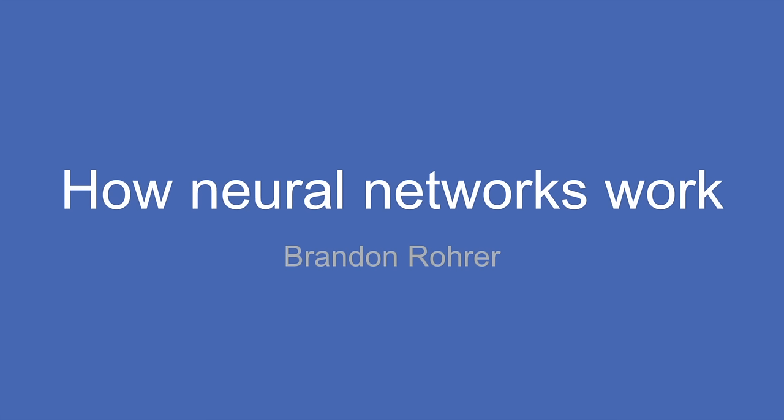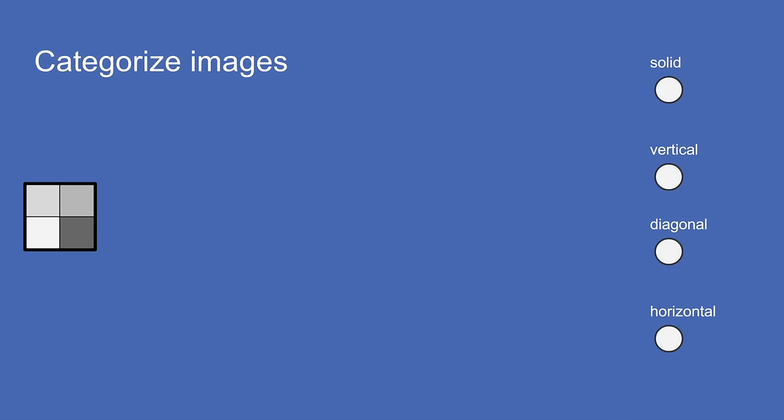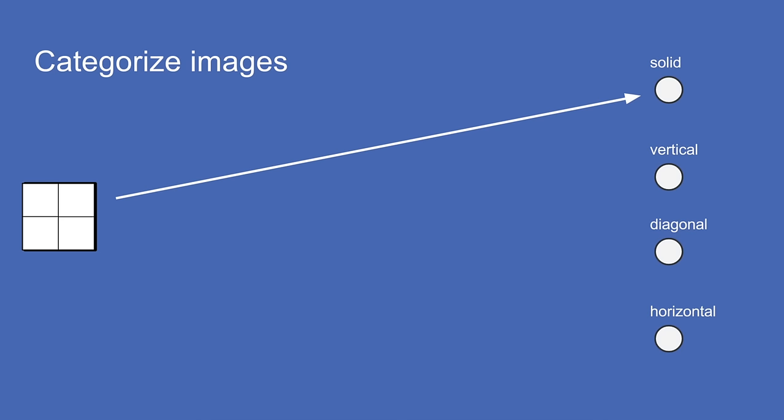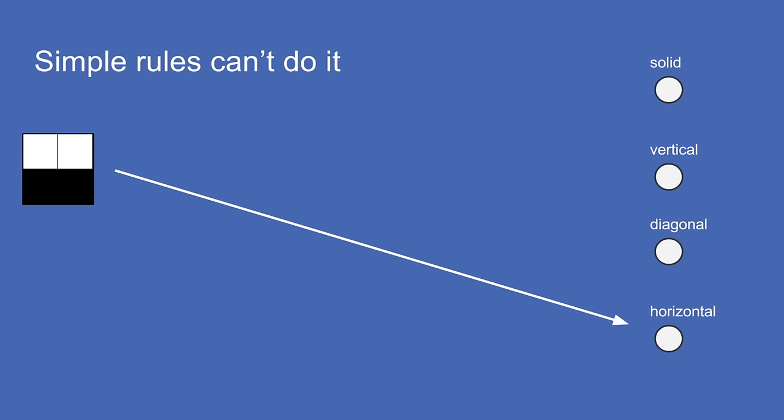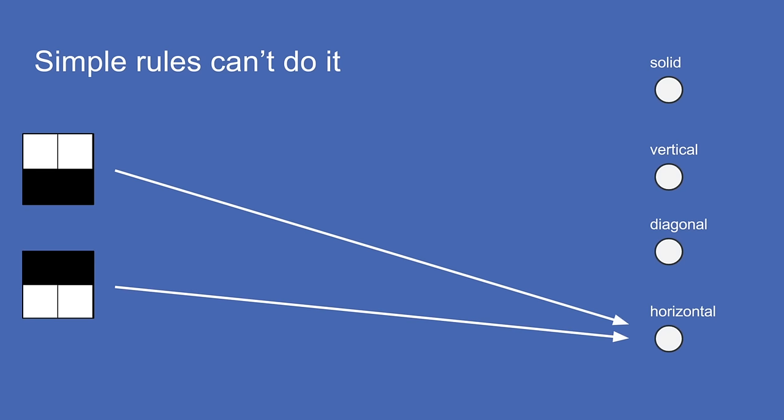Neural networks are good for learning lots of different types of patterns. To give an example, imagine you had a four-pixel camera — not four megapixels, just four pixels — and it was only black and white. You wanted to take pictures of things and automatically determine whether they were a solid all-white or all-dark image, a vertical line, a diagonal line, or a horizontal line. This is tricky because you can't do it with simple rules about pixel brightness.